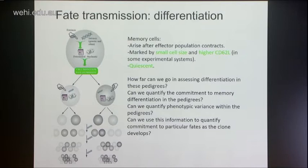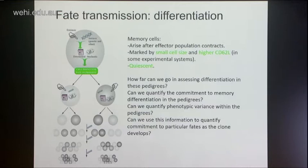We're not just looking at expansion and contraction profiles, but we're getting a sense for memory cell differentiation. We're now exploring how far we can go in assessing differentiation in these pedigrees — can we quantify commitment to memory by using multiple different attributes of the cells? Can we quantify phenotypic variants within the pedigrees? Can we use this information to quantify commitment to particular fates as the clone develops, and start to ascribe determinism in this context?